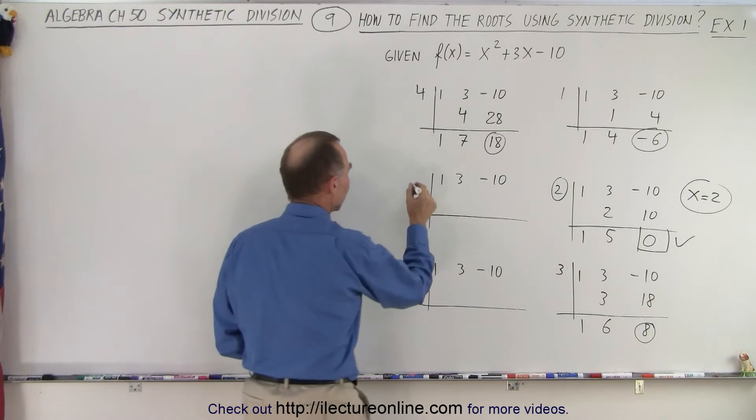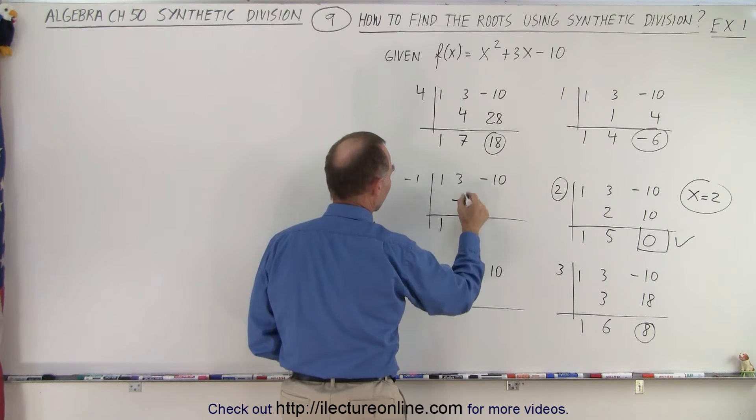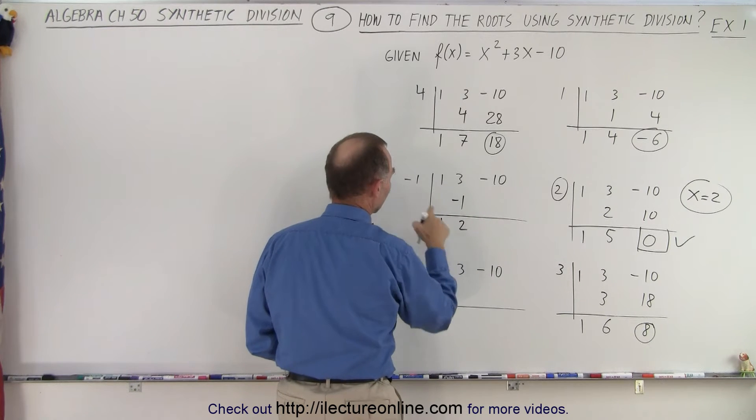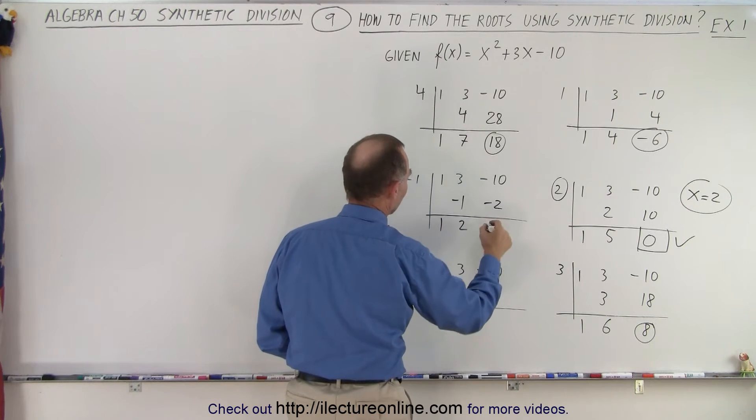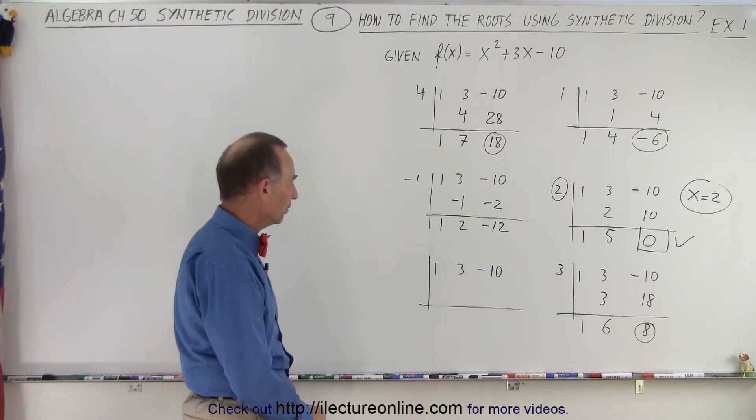How about try negative 1? Drop down the 1. Negative 1 times 1 is negative 1. Add it together, I get 2. Negative 1 times this is negative 2. Add them together, I get negative 12. Wow, that's not looking good.